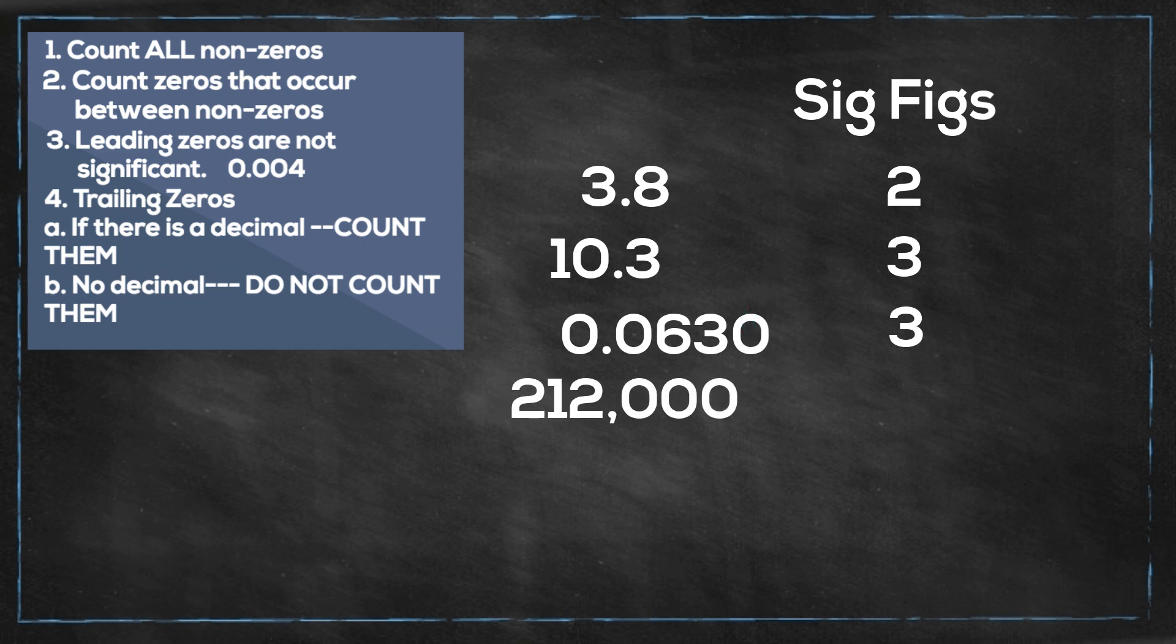This next one is 212,000. Remember, you do not count the trailing zeros if you do not have a decimal, so it is 3. This next one is 2.040. It has a decimal, so you count the trailing zeros, so that is 4.